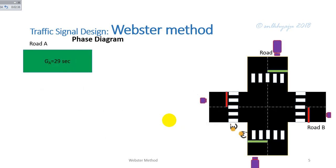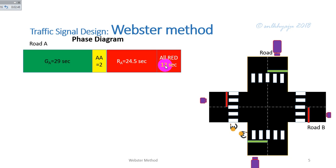Phase diagram for road A: green time for road A equals 29 seconds, amber is 2 seconds, and red for traffic on road A equals 24.5 seconds. All red for roads A and B equals 12 seconds.